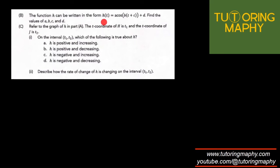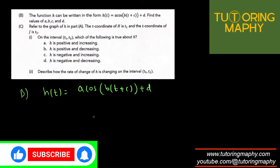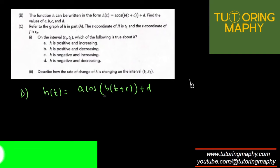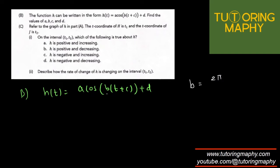Part B: The function h can be written in the form h(t) = a cos(b(t + c)) + d. Find the values of a, b, c, and d. B is the easiest because the coefficient b is 2π over the absolute value of the period. The period is 4, so 2π over 4 is π over 2.